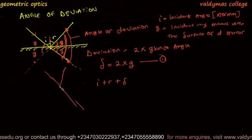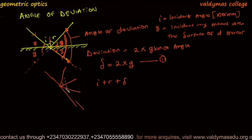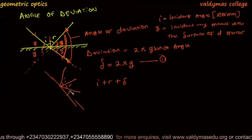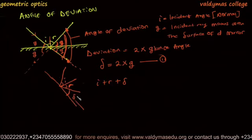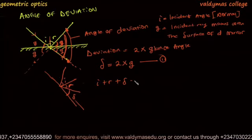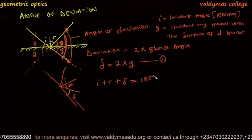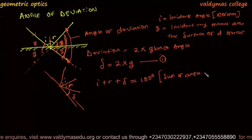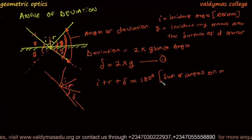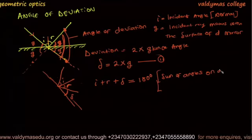Which means that I plus R plus deviation equals to 180 degrees. This is called sum of angles on a straight line.